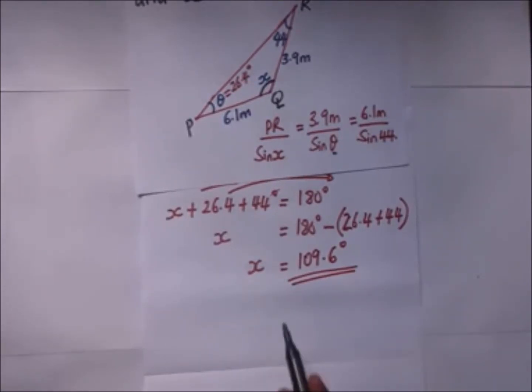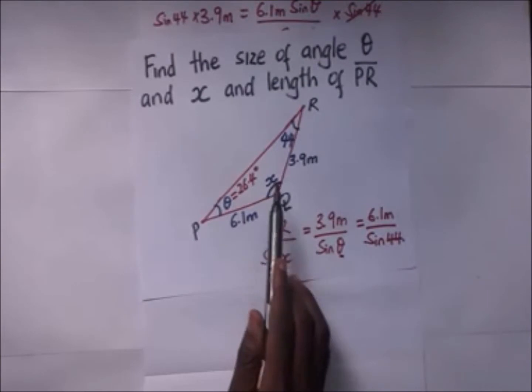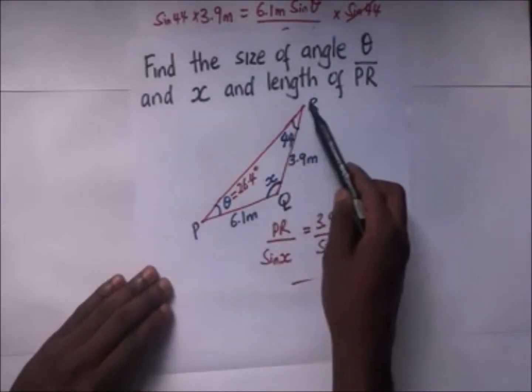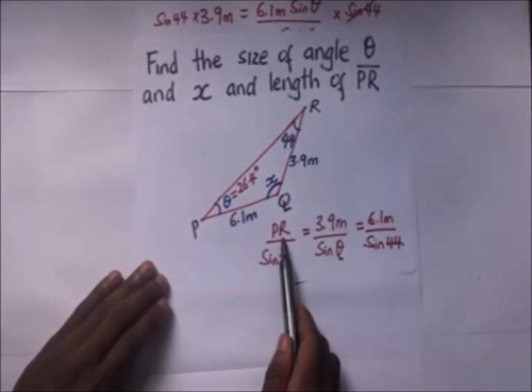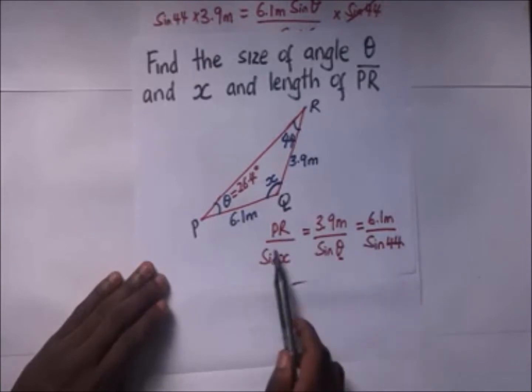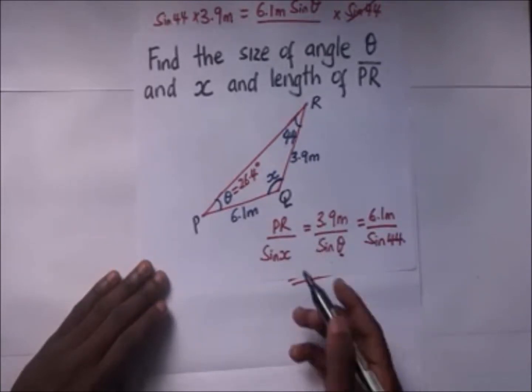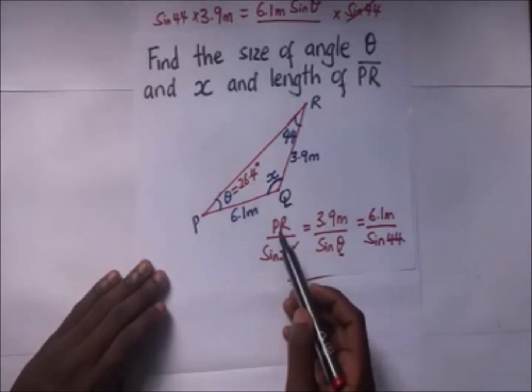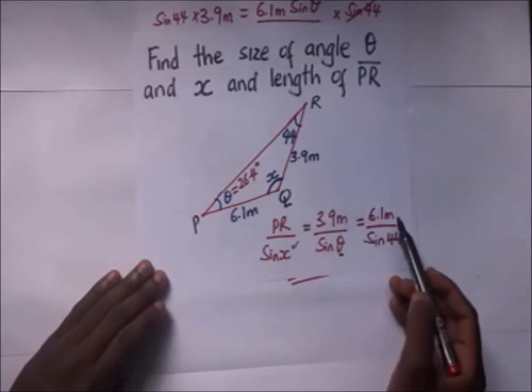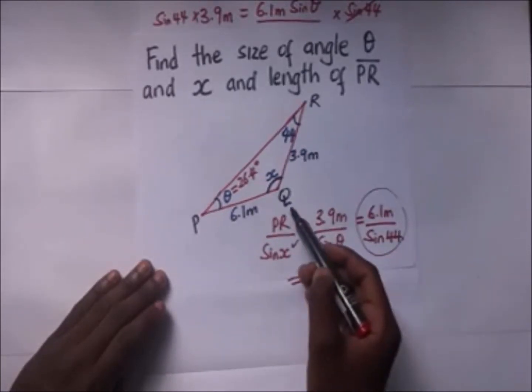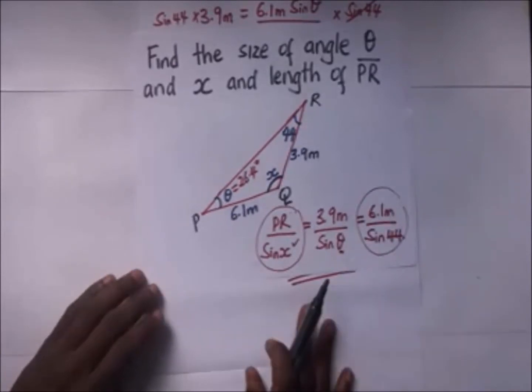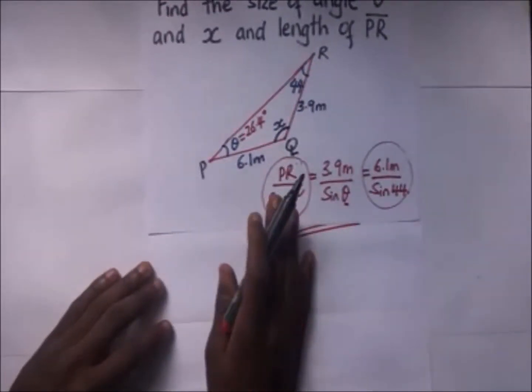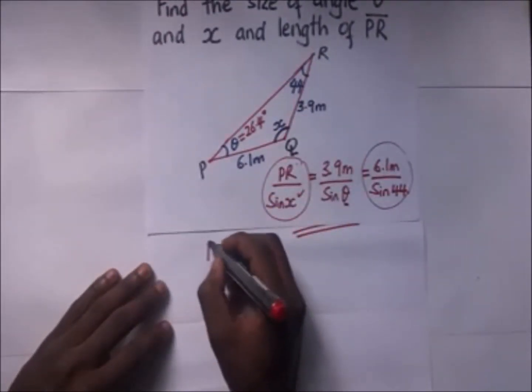That's our value of x. So after getting our value of x now we can proceed to get our value of PR. We can still get our value of PR by using still this same rule, the relation. We have the value of x there, we can relate this and that, the first one and the last part. So when you relate the two we have PR.